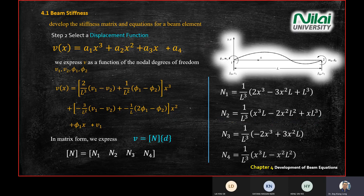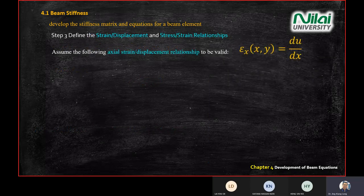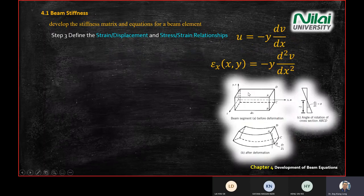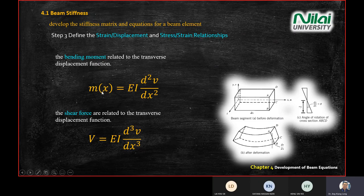Today we combine what we've learned into the full stiffness matrix. We already derived shape functions N1 through N4. For an element under deformation with loads at both ends, we arrive at the key equations: bending moment M equals EI times the double differentiation of the vertical displacement v.